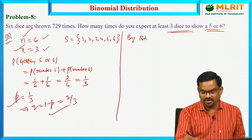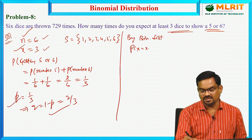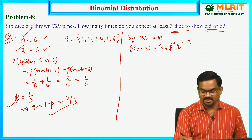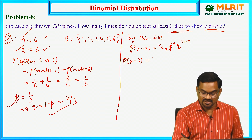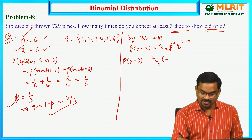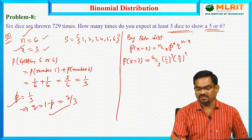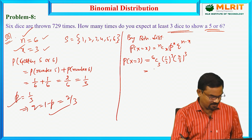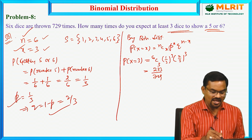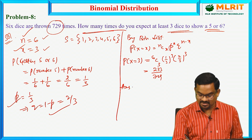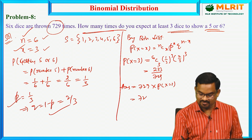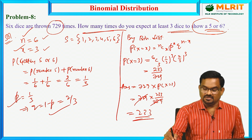By binomial distribution, P(x) = nCx * p^x * q^(n-x). We calculate getting exactly 3 successes out of 6: 6C3 * (1/3)^3 * (2/3)^3. The answer is 233/729. To find how many times out of 729, the final answer is 729 * 233/729, which gives 233 times — so 233 times we expect 3 dice showing 5 or 6.